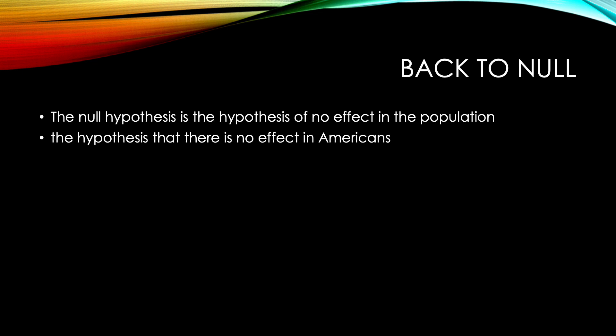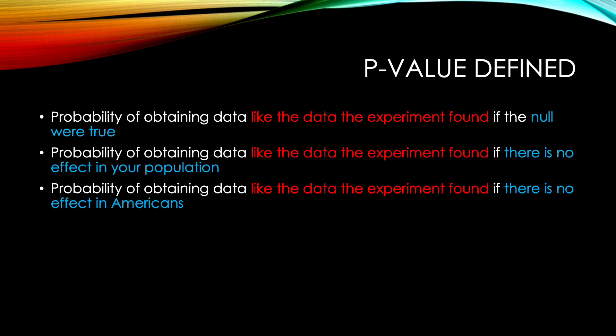Back to the null hypothesis — the null hypothesis is the hypothesis of no effect in the population, the hypothesis that there is no effect in Americans. My p-value defined is the probability of obtaining data like the data the experiment found if the null were true. Let's substitute in things we know: the probability of obtaining data like the data the experiment found if there is no effect of my IV on my DV in Americans. That's p-value.